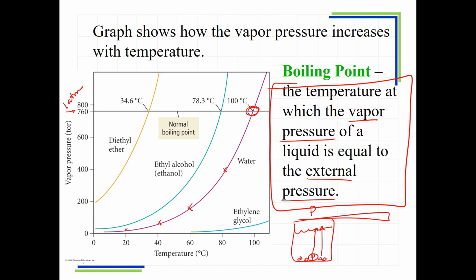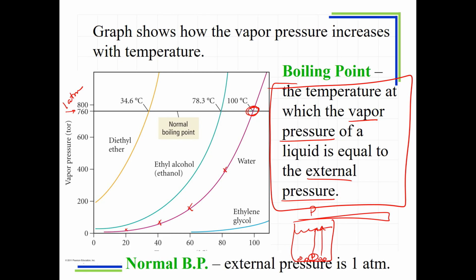Normal boiling point is when the external pressure is specifically 1 atmosphere. Water boils at different temperatures depending on external pressure. At a lower external pressure — such as at high elevation like the top of Pikes Peak — water boils at a lower temperature, which is why foods take longer to cook in boiling water at high altitudes.